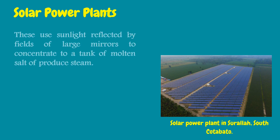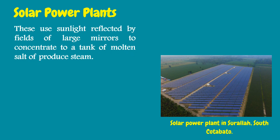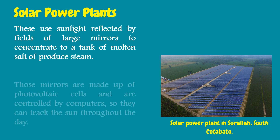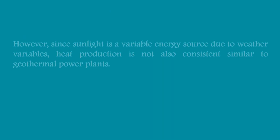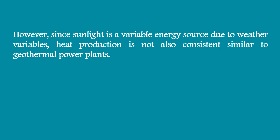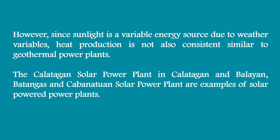Solar power plants use sunlight reflected by fields of large mirrors to concentrate energy onto a tank of molten salt or to produce steam. Those mirrors are made up of photovoltaic cells and are controlled by computers so they can track the sun throughout the day. However, since sunlight is a variable energy source due to weather, heat production is not consistent. The Kalatagan Solar Power Plant in Kalatagan, Balayan, Batangas, and the Cabanatuan Solar Power Plant are examples.